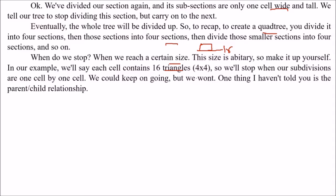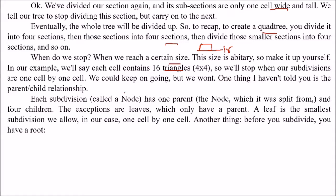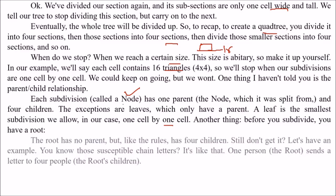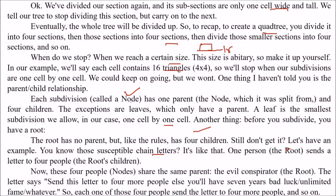One thing we should learn is the parent-child relationship. Each subdivision — called a node — has one parent, which is the node it was split from, and then four children. The exceptions are leaves, which only have a parent and no children. A leaf is the smallest subdivision we allow — in our case, one cell by one cell. The root has no parent but has four children. It's like a chain letter: one person sends a letter to four people, and each of those four sends it to four more, and so on.